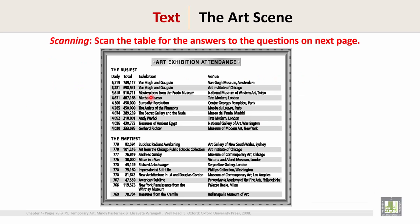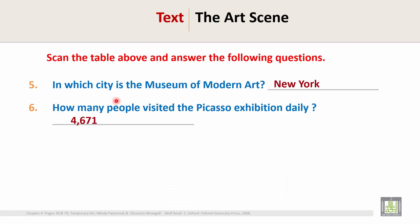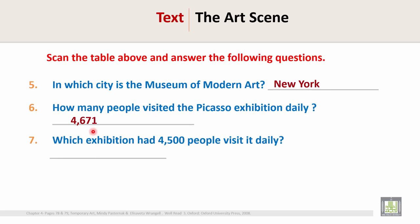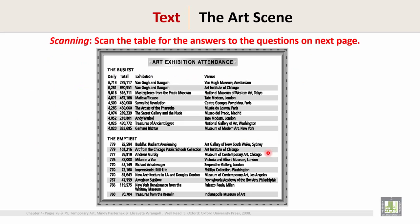Question 6: How many people visited the Picasso exhibition daily? Scan the table. Here is the Picasso exhibition — how many people visited daily? The answer is 4,671.